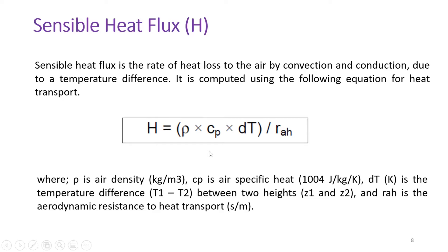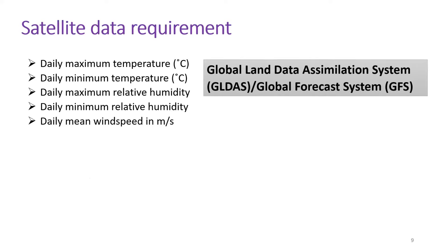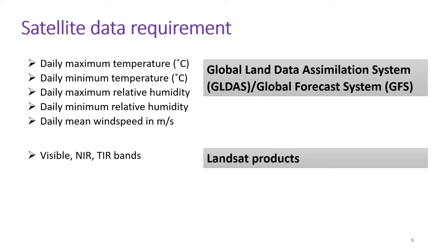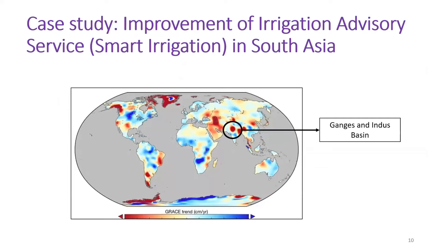The data required for calculating SEBAL evapotranspiration includes daily maximum temperature, daily minimum temperature, relative humidity, and wind speed — these weather parameters are obtained from two products: the Global Land Data Assimilation System (GLDAS) and the Global Forecast System (GFS). For NDVI, Leaf Area Index, and surface temperature, the visible, near-infrared, and thermal infrared bands of Landsat products are used. Combining all these inputs yields the SEBAL evapotranspiration output.